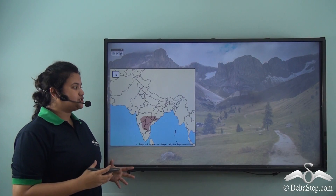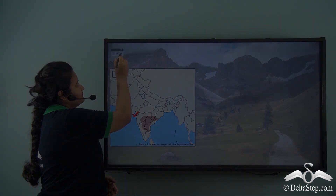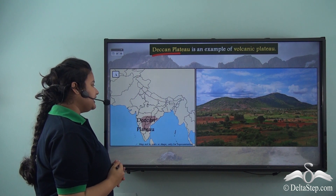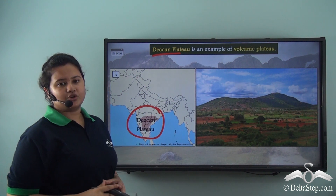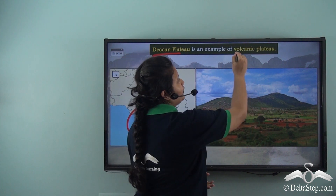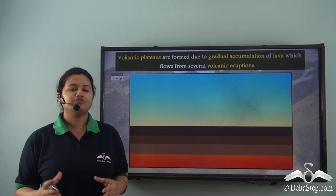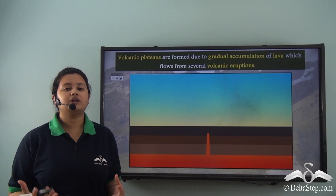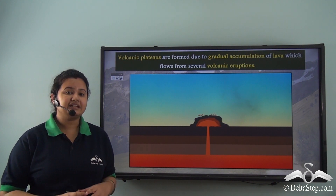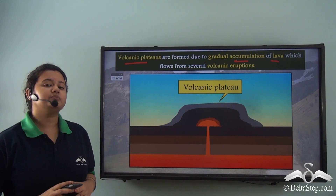We also have a plateau in our country — the Deccan Plateau, situated in peninsular India, also known as the Deccan Trap region. Deccan Plateau is an example of a volcanic plateau. Volcanic plateaus are formed due to endogenic forces — specifically, several volcanic eruptions. Lava that comes out of volcanic eruptions gradually condenses on reaching the earth's surface, and this gradual accumulation of lava leads to the formation of volcanic plateaus.